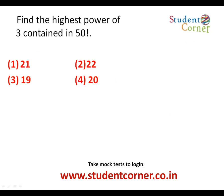The next question is about the highest power of 3 contained in 50 factorial. First, we need to know what n factorial means — it is n × (n−1) × (n−2) × ... × 1. For example, 5 factorial is 5 × 4 × 3 × 2 × 1 = 120. If someone asks the number of zeros at the end of 5 factorial, the answer is 1. But we are now talking about 50 factorial, which we cannot compute directly.